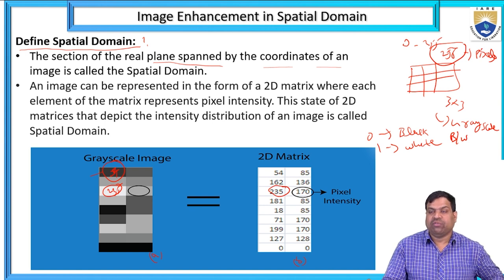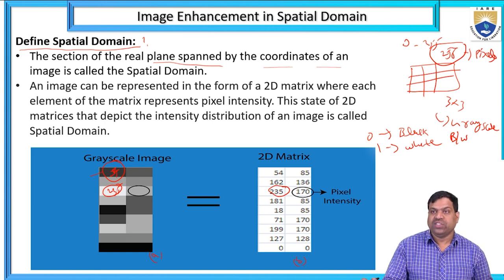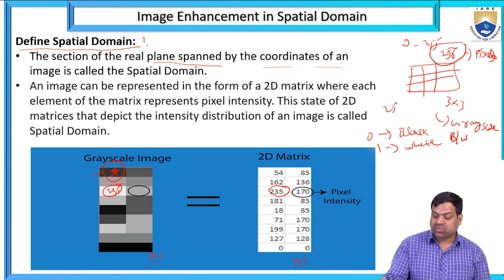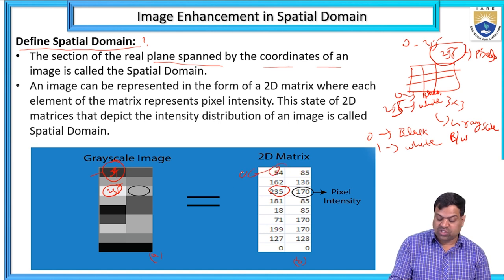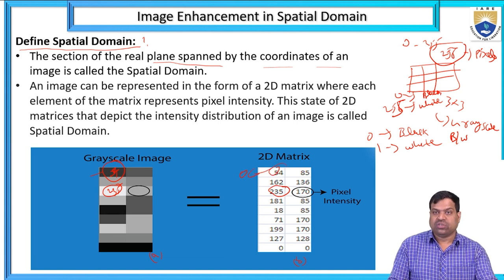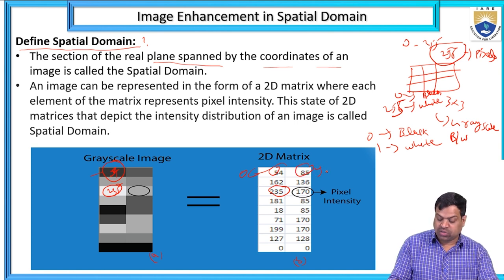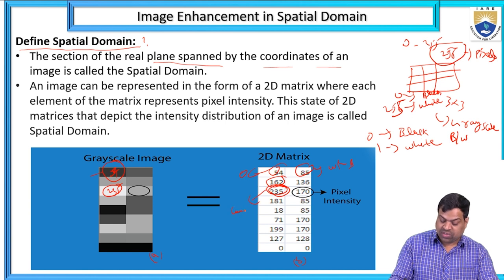0 is black and 255 is white. So 54, being close to 0, is reaching toward black. 85 is also reaching toward black. 162 means somewhat brighter, toward white. 235 means it is completely white. So in the 2D matrix, each cell represents a pixel intensity value in the grayscale image.